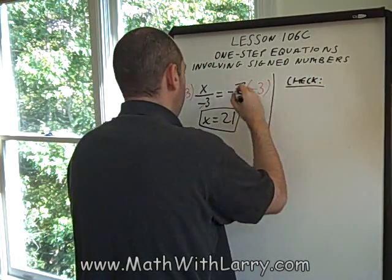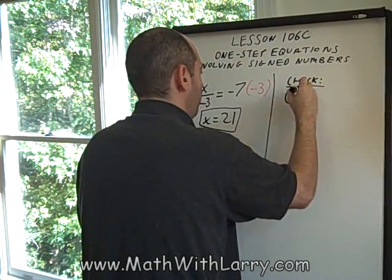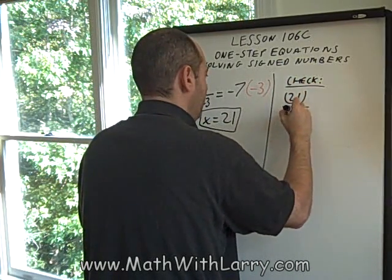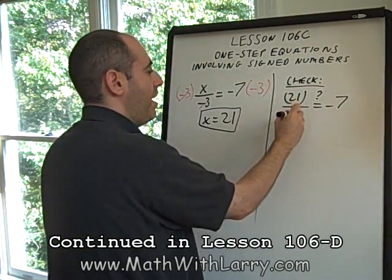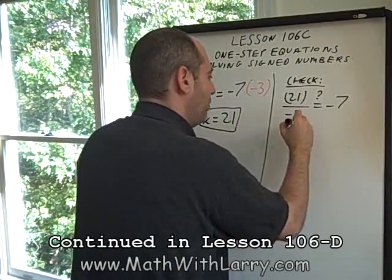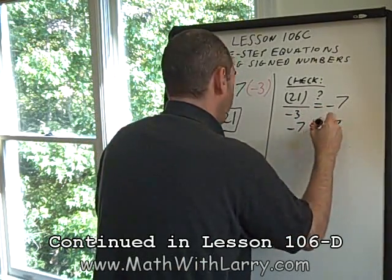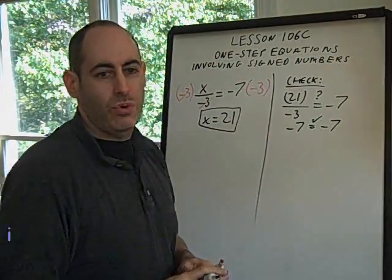Let's just check really fast. I'll skip rewriting the original problem. I just want to check. Does 21 divided by negative 3, does that equal negative 7? And it does. A positive divided by a negative is a negative. That does equal negative 7. So, our answer of 21 does work.